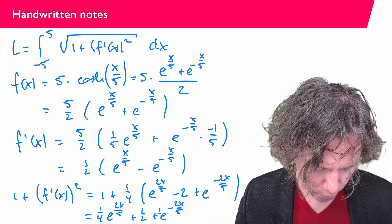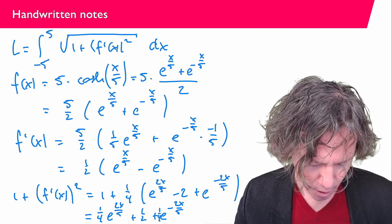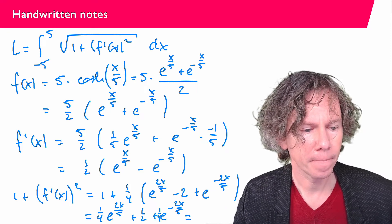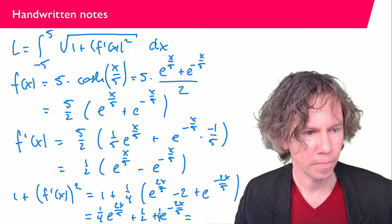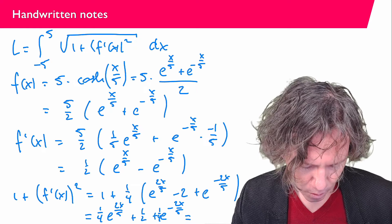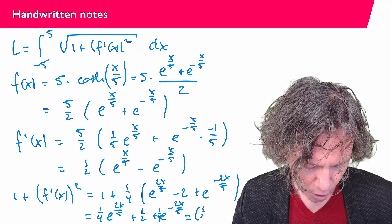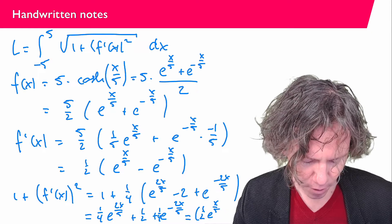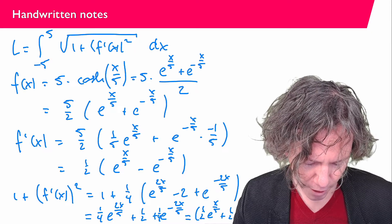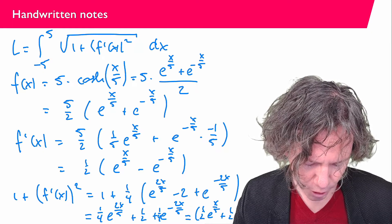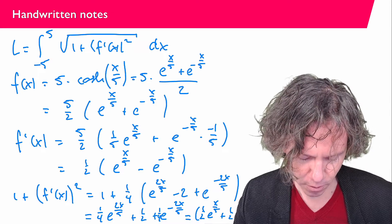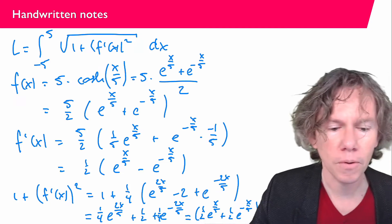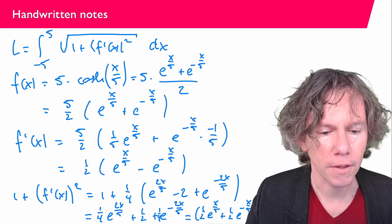I should put a 1 over 4 here. This equals 1 half e to the power x over 5 plus 1 half e to the power minus x over 5 squared. So you can rewrite it like this. Let me move this out of the way so you can read the whole expression. You see that I can write this as a square.